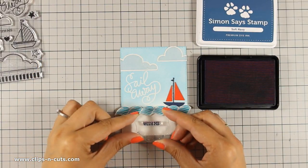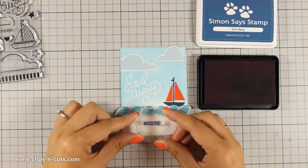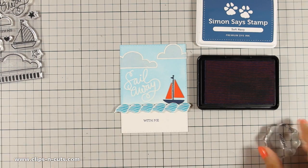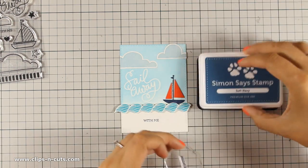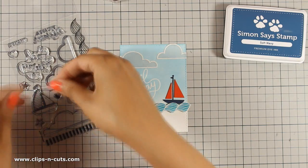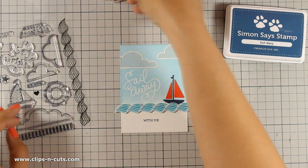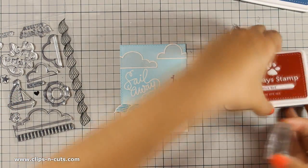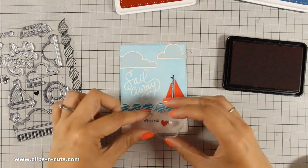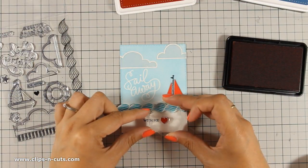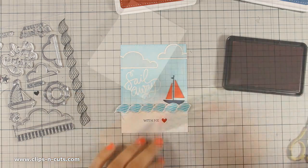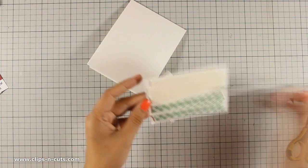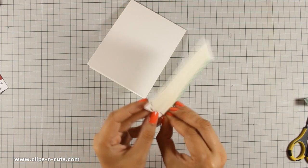For my sentiment I am using the word with me that was included in the stamp set and I have used Soft Navy exclusive Simon Says Stamp ink pad and that's because it perfectly matches the Soft Navy cardstock that I have used for my sailboat. And I did the same thing for the little heart. I have used lipstick red which is the exact same color as the red on the sailboat.